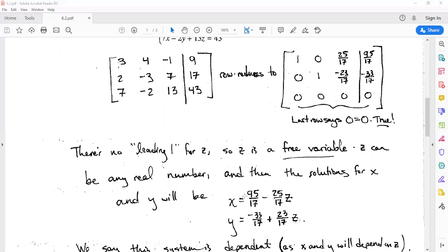So really we can just subtract 25 over 17 z from both sides and get that x equals 95 over 17 minus 25 over 17 times z. The second row becomes the equation 0x plus 1y minus 23 over 17 z equals minus 33 over 17. If we add 23 over 17 z to both sides, we get y equals minus 33 over 17 plus 23 over 17 times z.